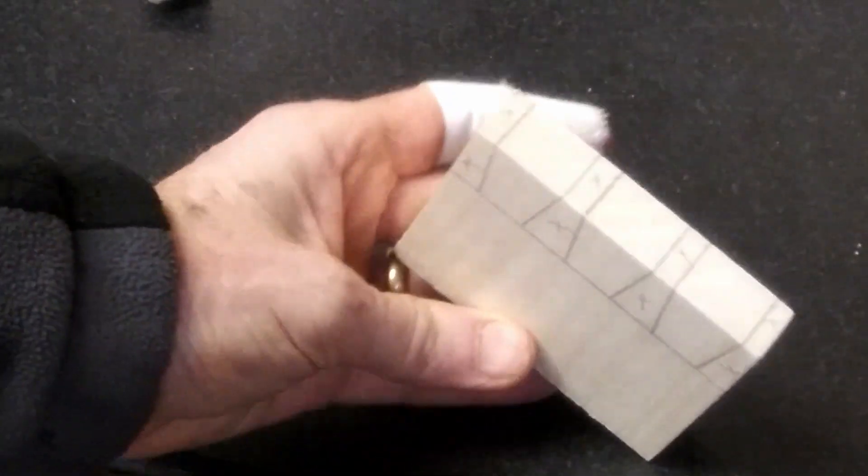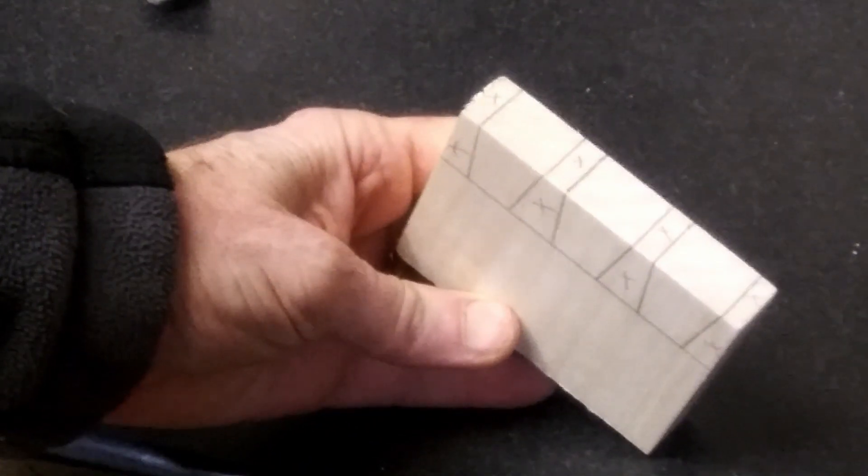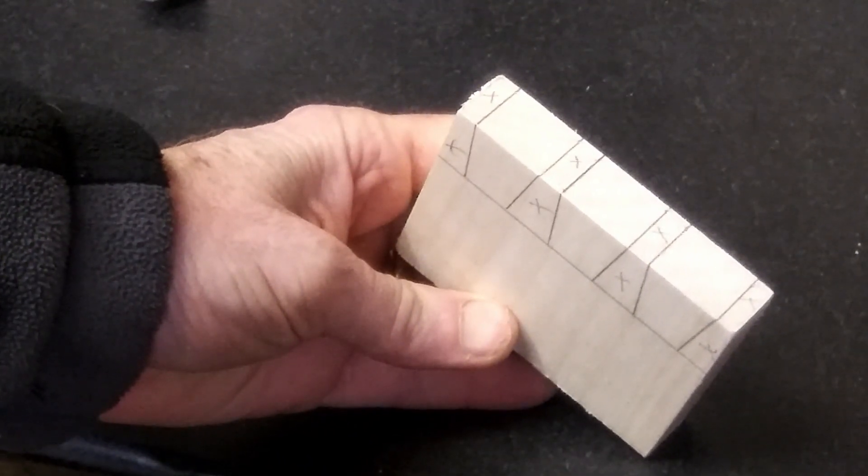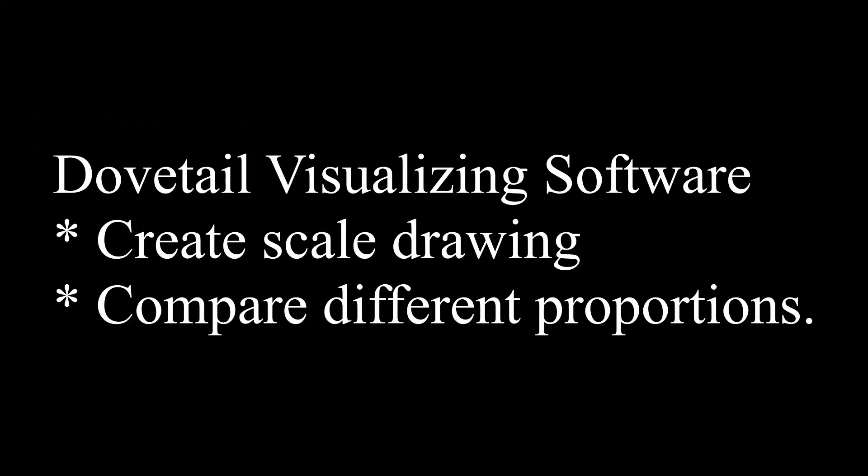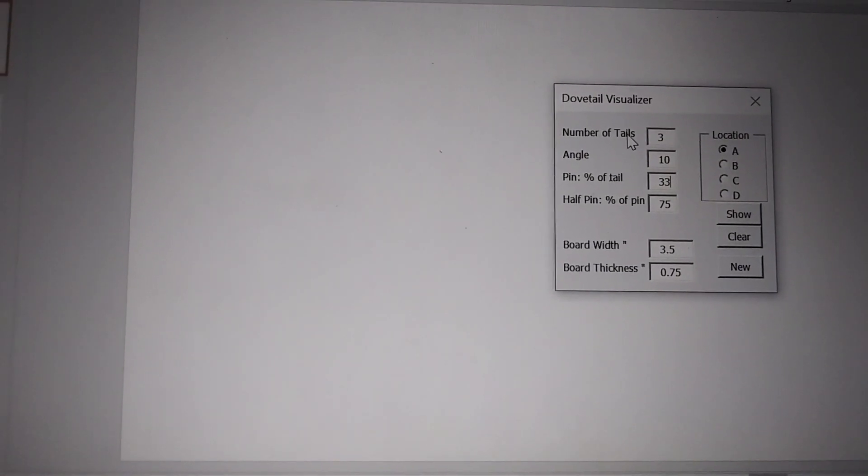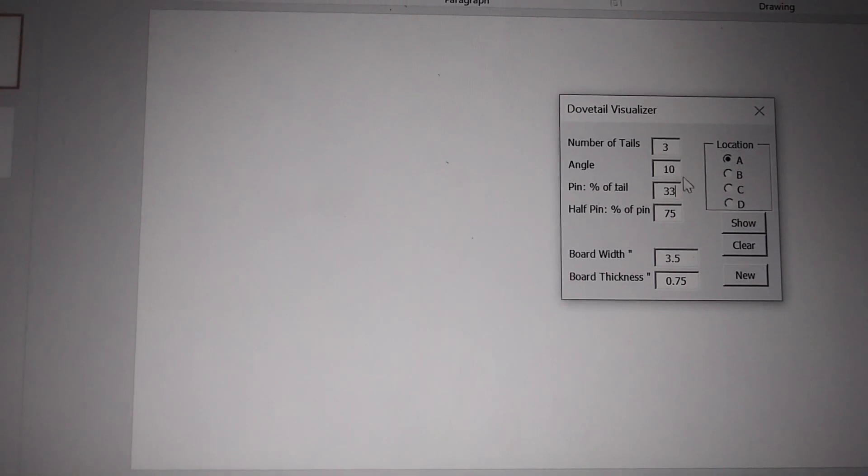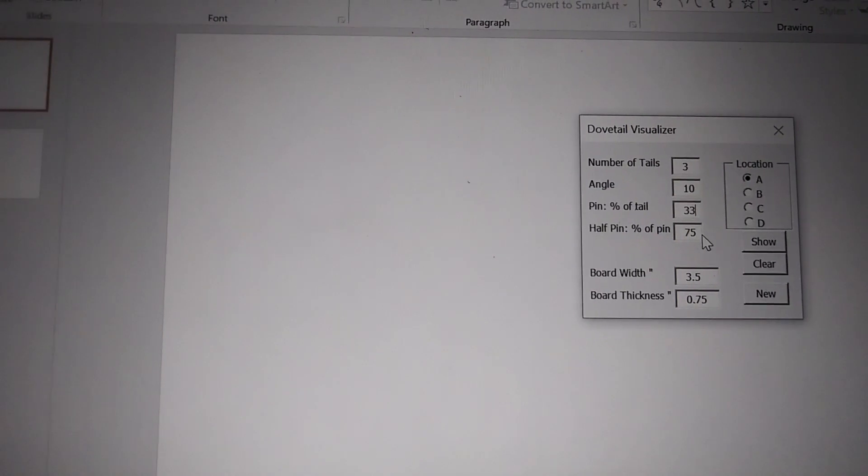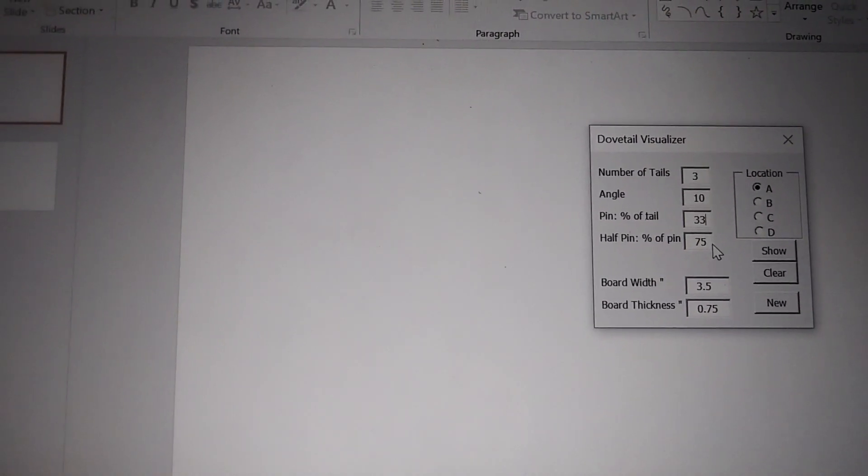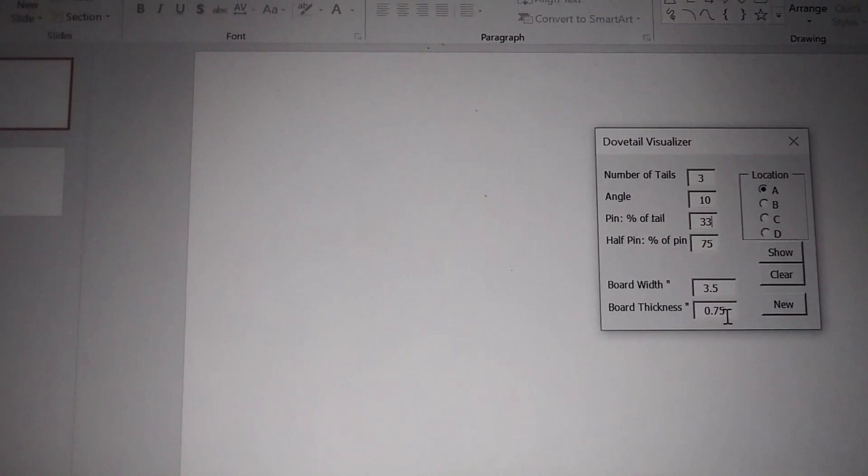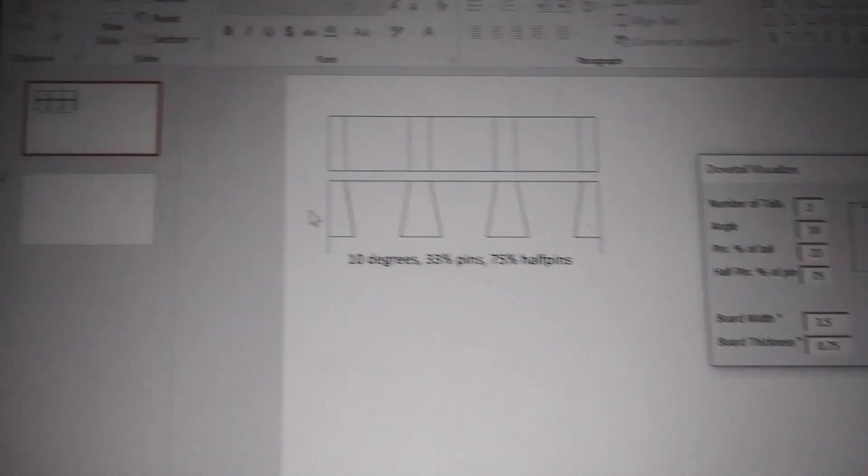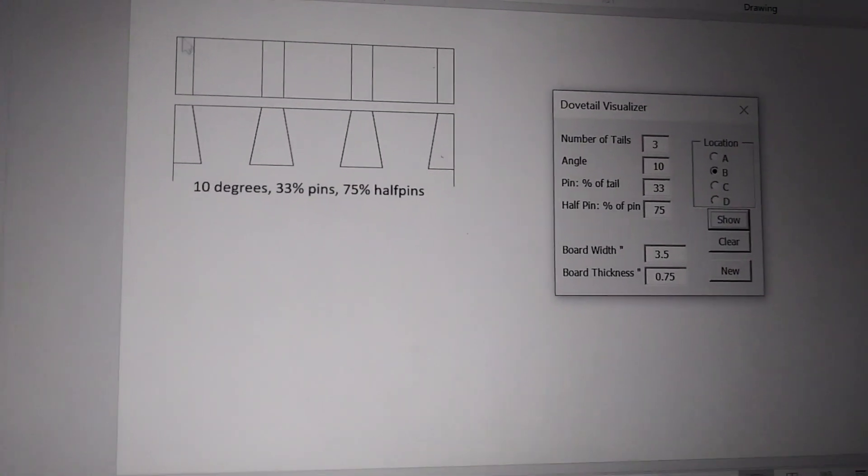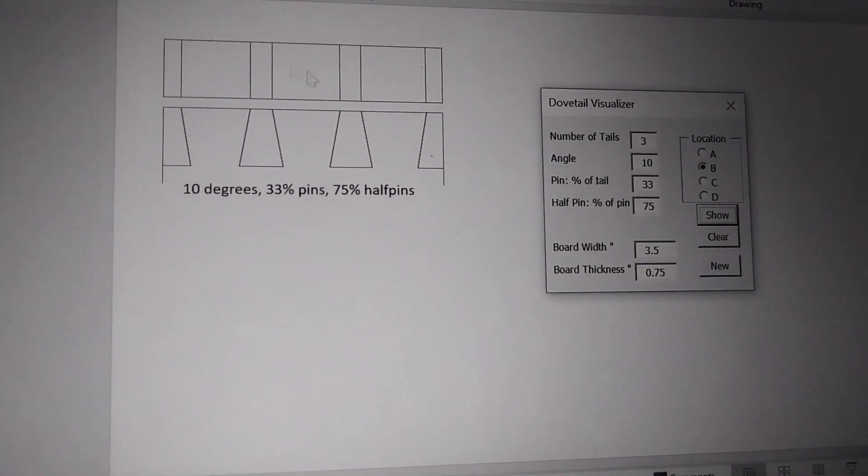I also created some software in PowerPoint with Visual Basic to create scale drawings. Let's say I want to have three tails with a 10 degree angle, pins being a third the size of the tails, and the half pins being three quarters the size of the pins for this size and thickness of boards. I can show a little model of what this is like and it's the right scale so that I can take it directly onto the boards.